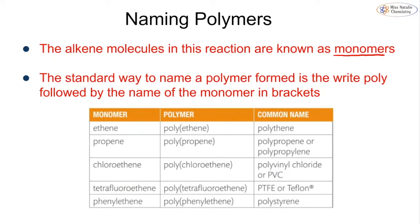The alkene molecules in the reaction are known as our monomers - 'mono' means one and 'mer' means unit, so these are our single units. The standard way to name our polymer - 'poly' meaning many and 'mer' meaning unit - is simply to write the word 'poly' followed by the name of the monomer in brackets. For example: ethene becomes polyethene, propene becomes polypropene, chloroethene becomes polychloroethene (also known as PVC), tetrafluoroethene becomes polytetrafluoroethene (PTFE), and phenylethene is polyphenylethene, more commonly known as polystyrene.